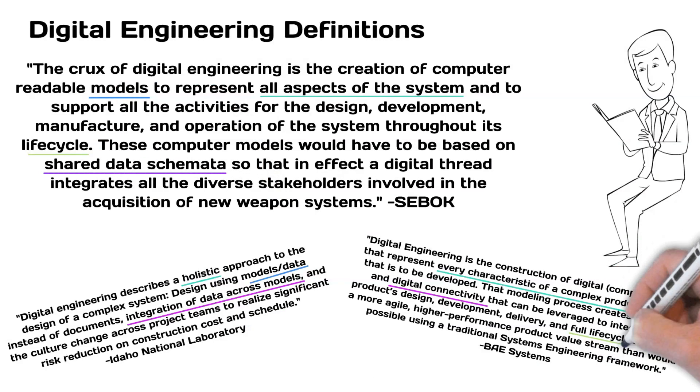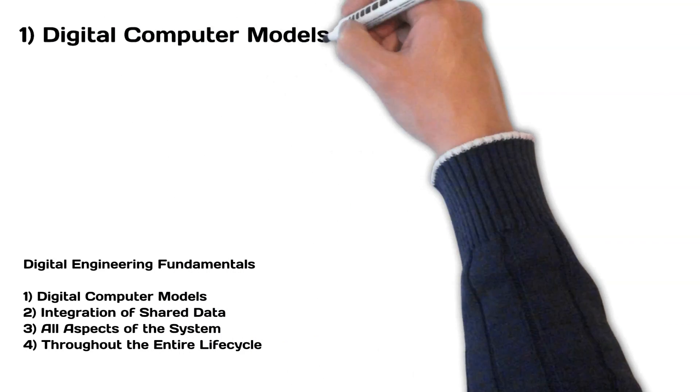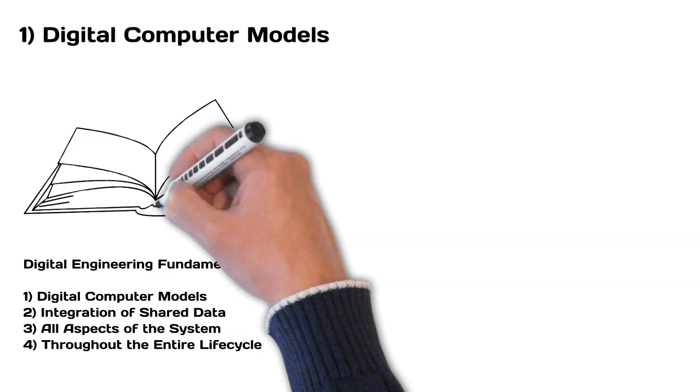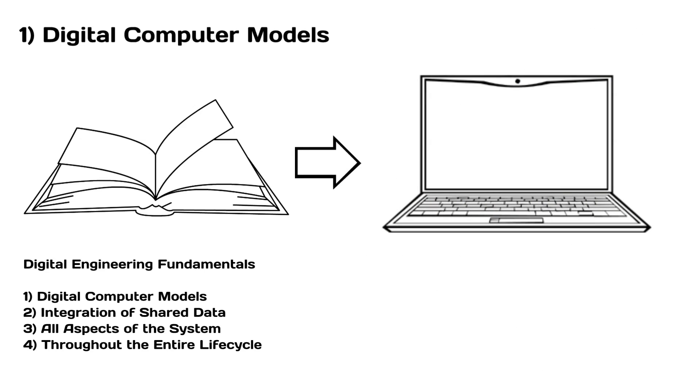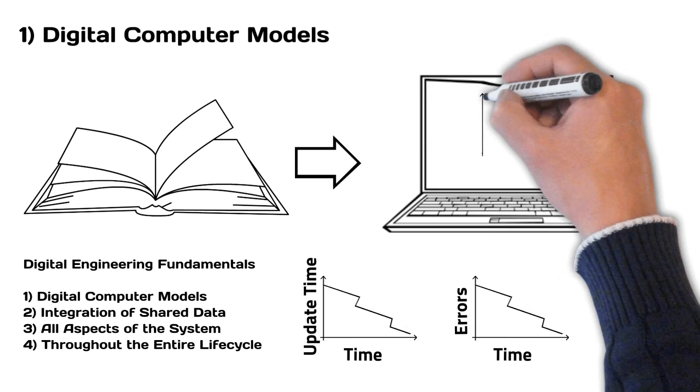Let's break these down in more detail one by one. First, digital models versus paper documents. By storing our data in computer models rather than legacy paper documents, we allow ourselves the ability to update something in one location and the change can be propagated everywhere. This reduces the amount of time to update, reduces human errors, and makes traceability much easier.